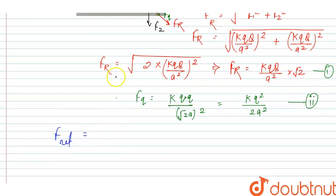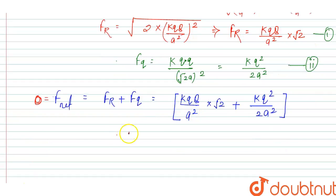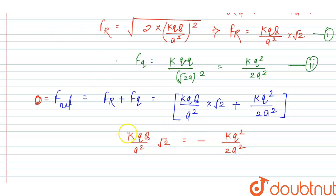The net force F_net equals FR plus Fq, which is k times small q times capital Q upon a squared times root 2, plus k times q squared upon 2a squared. Since the question states that F_net equals zero, we set this expression equal to zero and cancel k, q, and a squared from both sides.